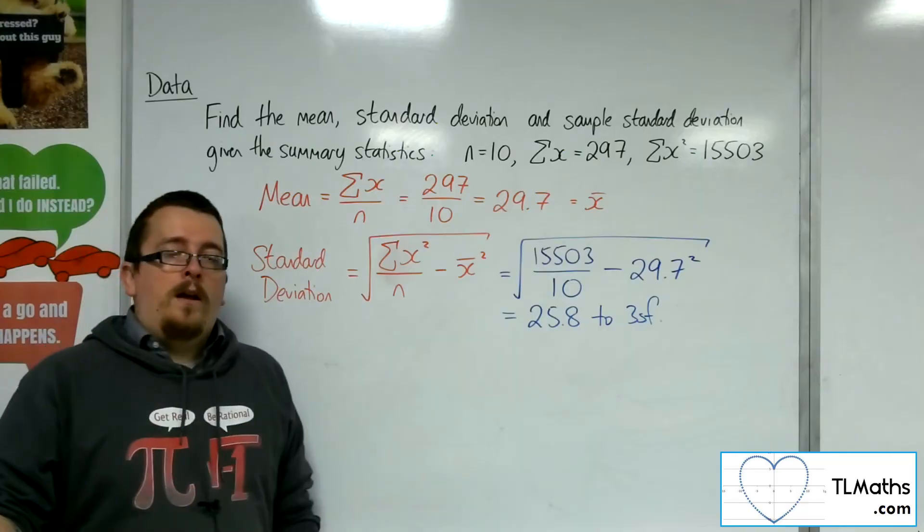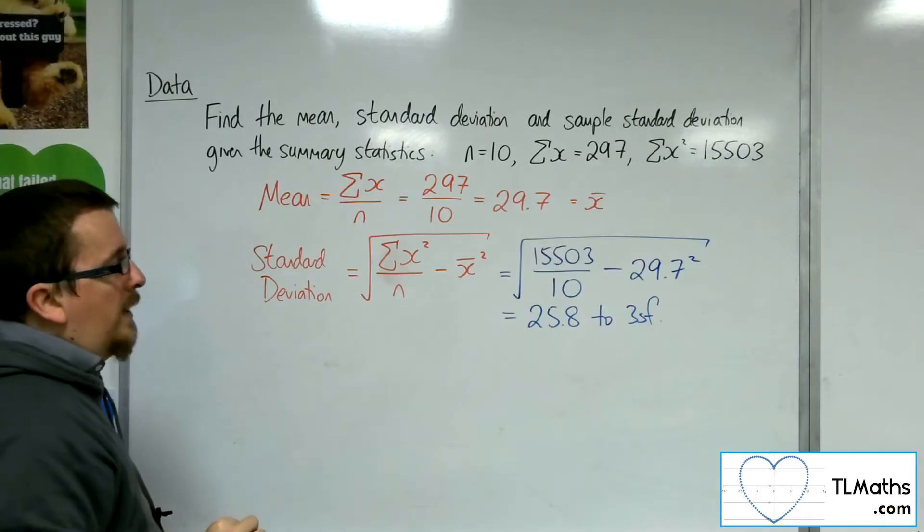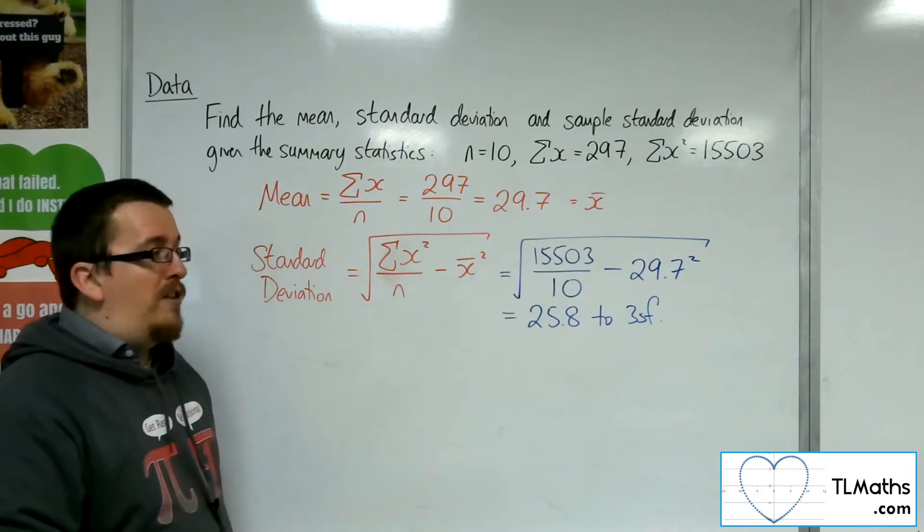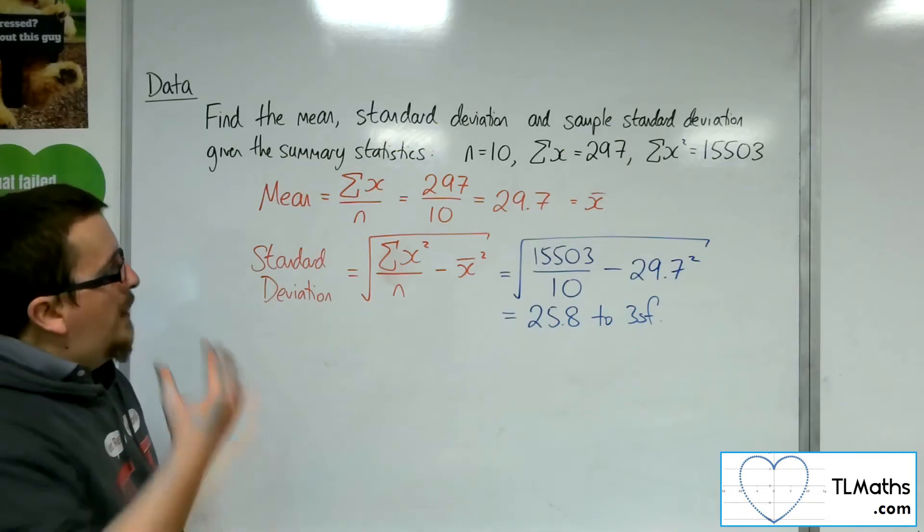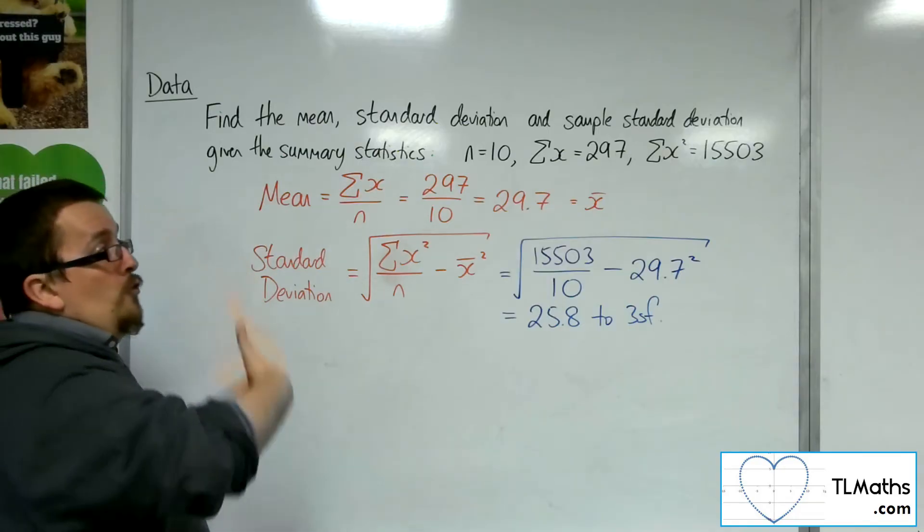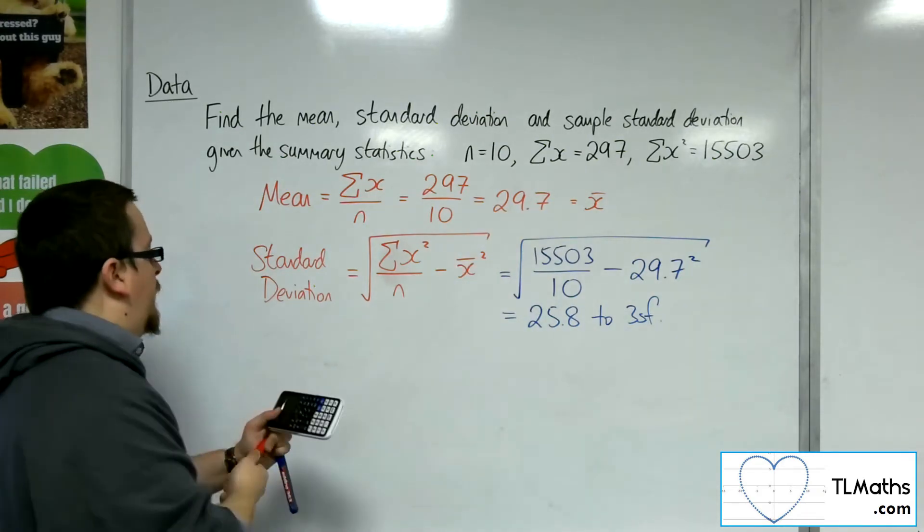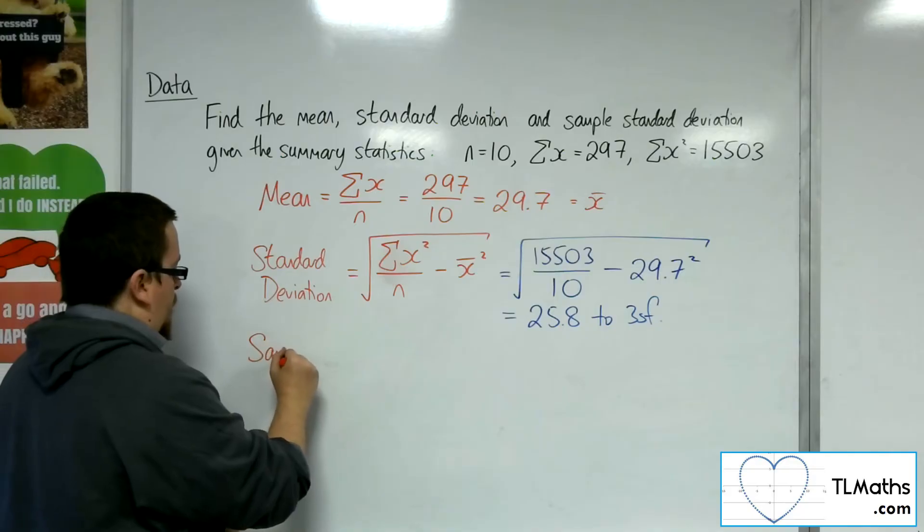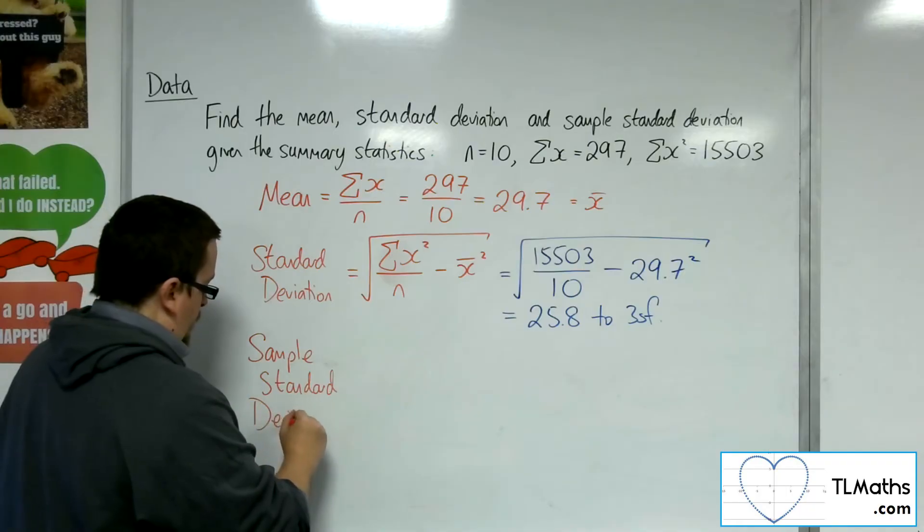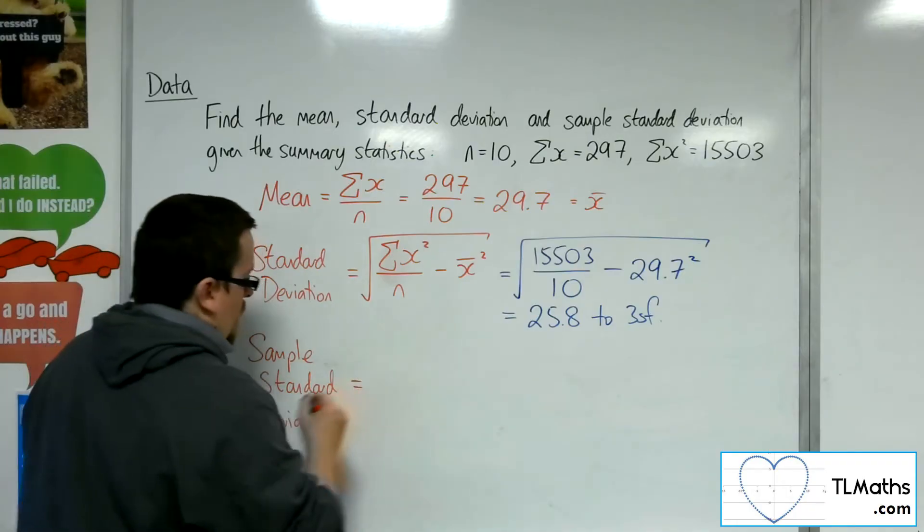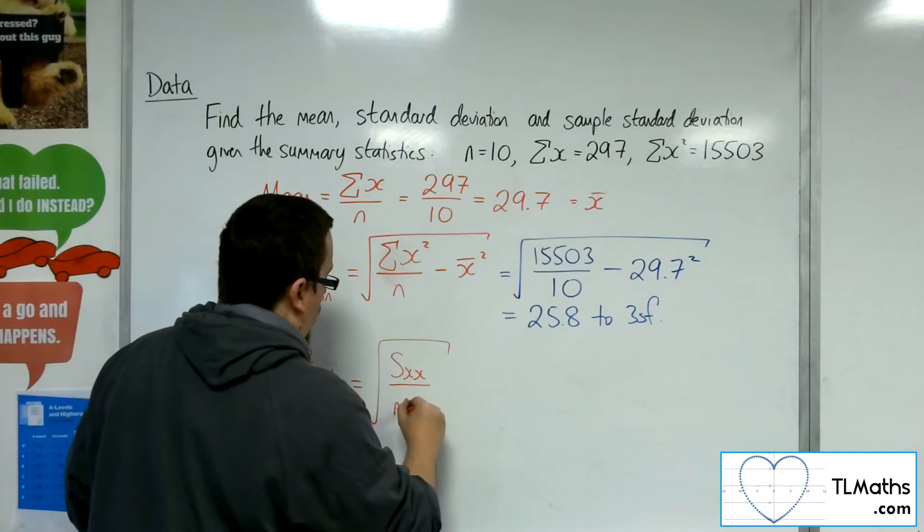Now, if you are doing OCR-MEI, then you would need to have the SXX formula, divide that by n minus 1, and then square root. So you'll get a slightly different answer, slightly larger answer. Now, that would be for us to find a sample standard deviation. So, the sample standard deviation is equal to the square root of SXX over n minus 1.